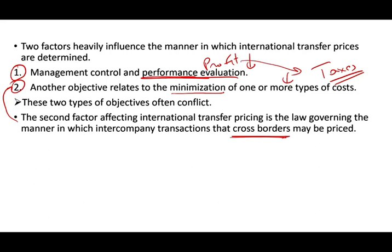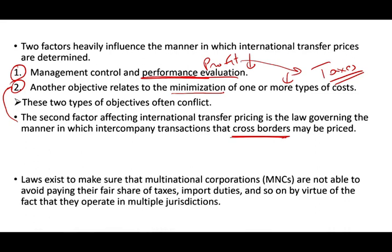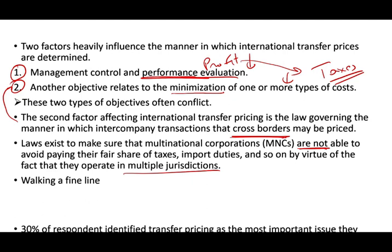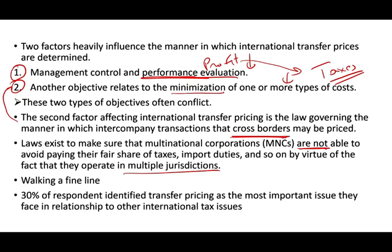Countries around the world are aware that companies do this, so laws exist to ensure that multinationals are not able to avoid paying taxes or their fair share of import duties by operating in multiple jurisdictions. There are specific rules and regulations — we will go over the US rules on what you can and cannot do and what your options are as a company. Companies are walking a fine line here in how they price products internally. A recent survey found that 30% of respondents identified transfer pricing as the most pressing issue facing their tax division, making it critical to get the transfer price right — otherwise you face audits and fines.